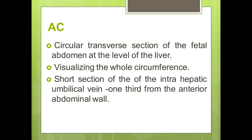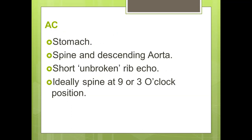Abdominal circumference seems to be the most difficult parameter to measure, but with care and accuracy we can get a good result. Key points: the transverse section of the fetal abdomen should be circular, not oval or oblong. The whole circumference should be visualized with a short section of the intrahepatic umbilical vein. We should visualize the stomach, spine, descending aorta, and a short unbroken rib echo. Importantly, the spine should be at nine or three o'clock, not at twelve or six o'clock, because spine shadowing can obscure other structures.